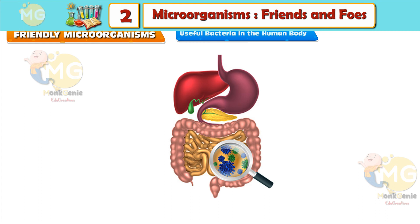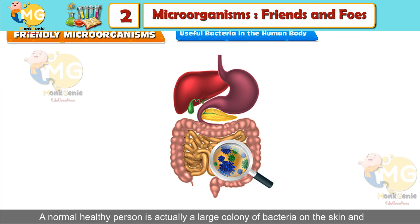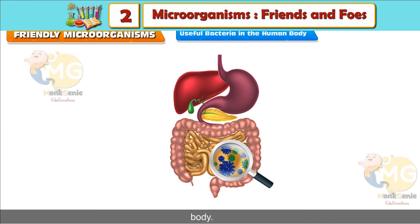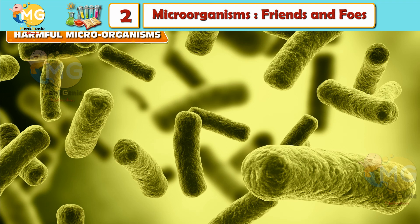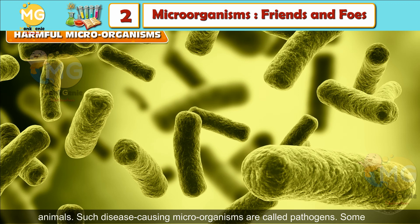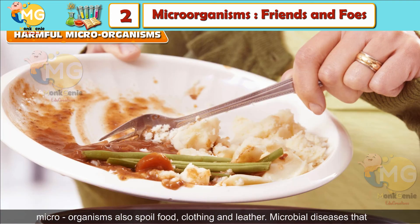Useful bacteria in the human body: A normal healthy person is actually host to a large colony of bacteria on the skin and inside the body. Certain bacteria also live in the intestines of humans, helping to digest food and producing some vitamins needed by the human body. Harmful microorganisms: Some microorganisms cause diseases in human beings, plants and animals. Such disease-causing microorganisms are called pathogens. Some microorganisms also spoil food, clothing and leather.